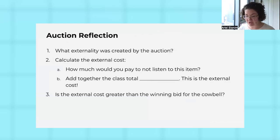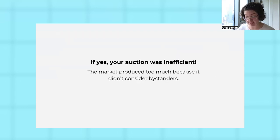Then we bring it back to the auction. Our goal here is to get students to see that this was an inefficient auction. We ask them, how much would they pay not to listen to this item? Some people may be a lot bothered compared to others. You're going to add together that class total to get the external cost and compare that to the price of the winning bid to say, was the benefit greater than the cost? If your cost is much higher than your benefit, your auction was inefficient. The market produced too much. It didn't consider all of the bystanders.